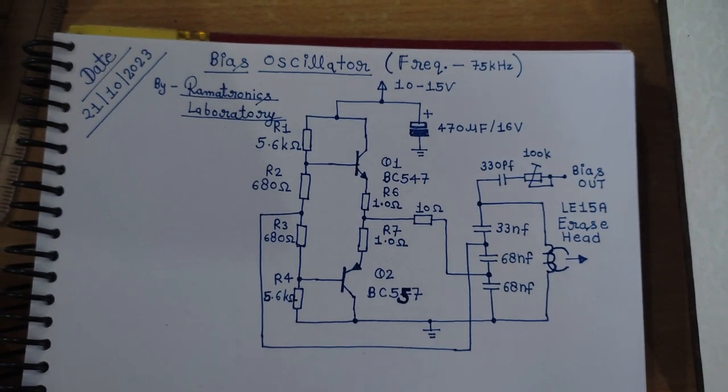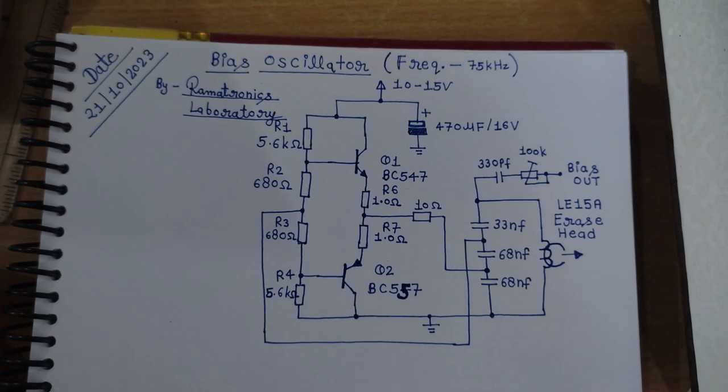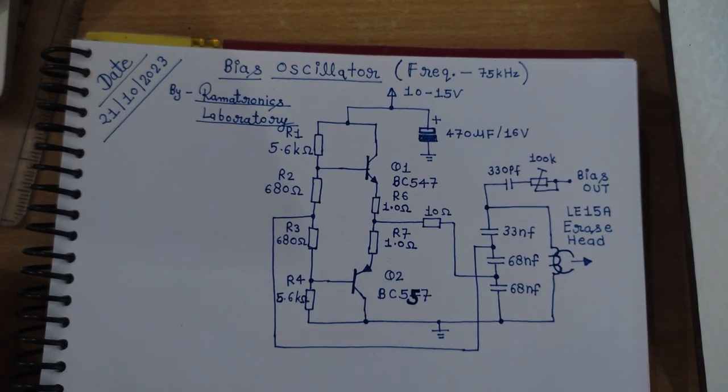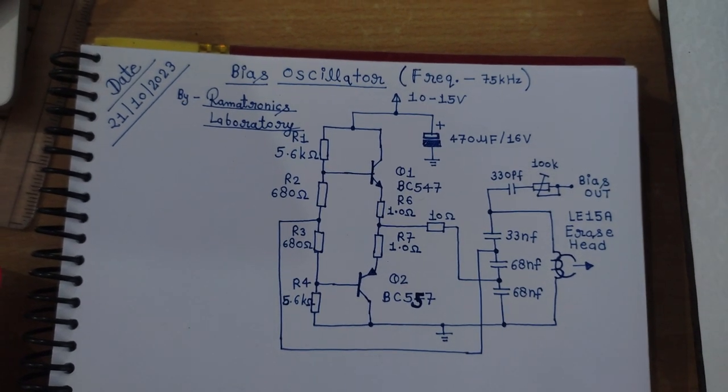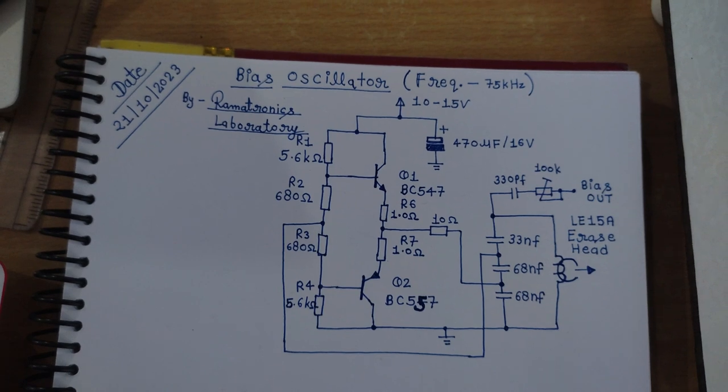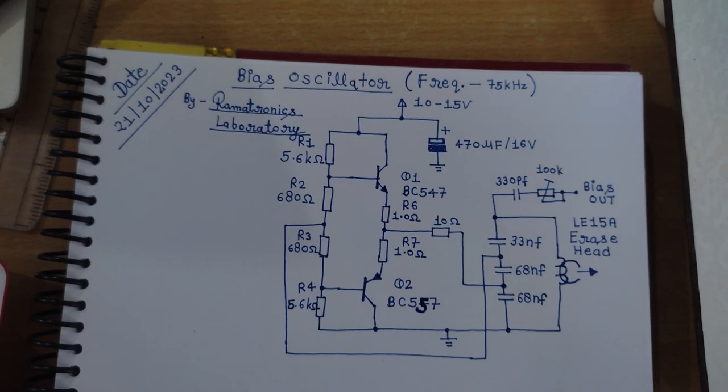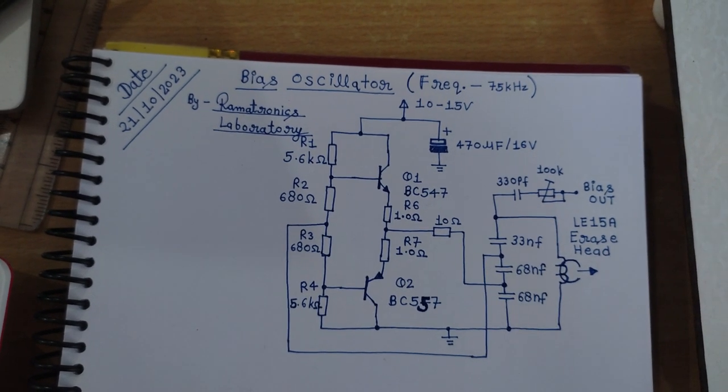So basically the frequency of the BIOS oscillator is always kept higher than 20 kilohertz, because 20 kilohertz is the maximum frequency of audible range.